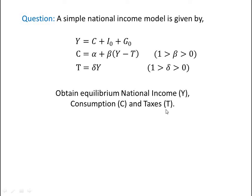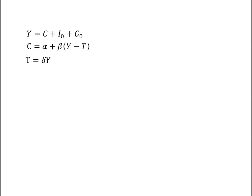We need to obtain equilibrium national income, consumption, and taxes — that means we have to solve this national income model. Since these three equations form a system with variables y, c, and t, this is a simultaneous equation system. We rewrite the first equation as y minus c equals i0 plus z0.